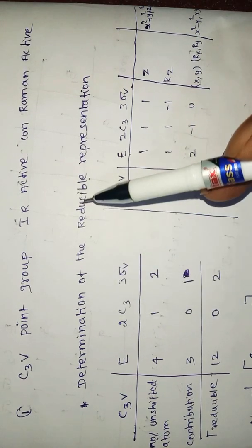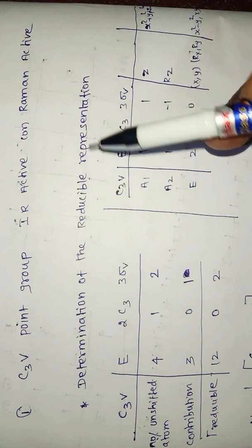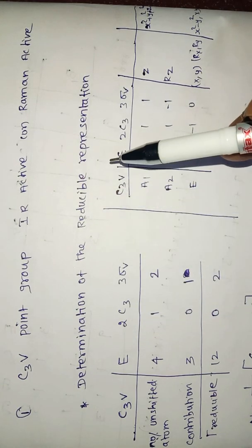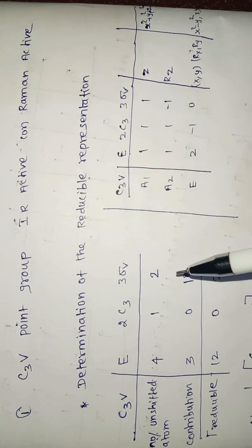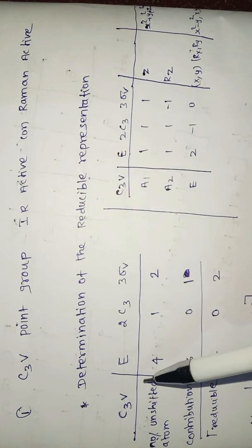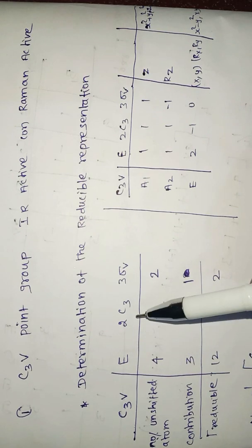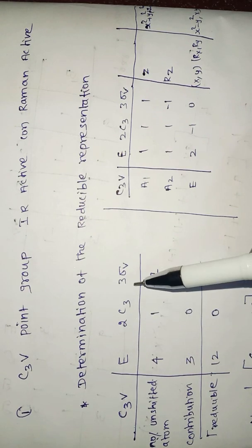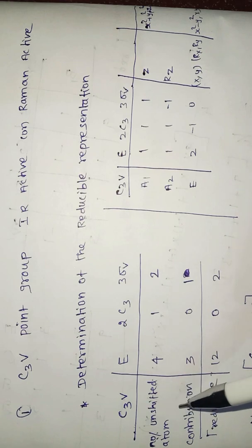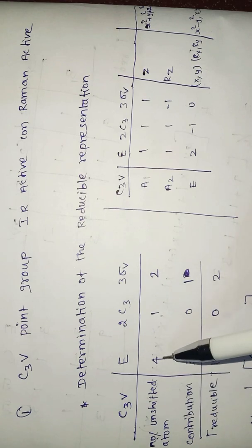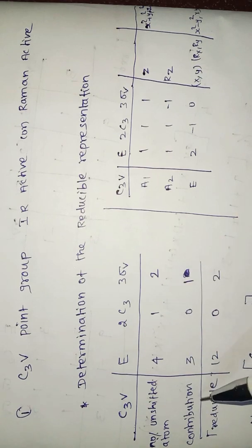First, we need to find the reducible representation. For C3V, we have the symmetry operations E, 2C3, and 3σv. The number of unshifted atoms are 4, 1, and 2 respectively.